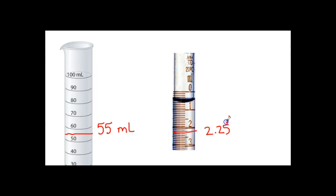So 2.25. This is the digit in your significant figure that you guessed: 2.25 milliliters. If you're going to add those two together, you get 55 milliliters plus 2.25 milliliters, which gives you 57.25 milliliters.